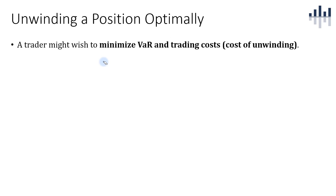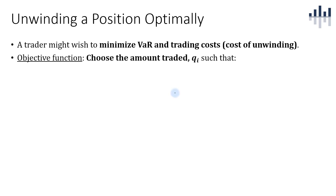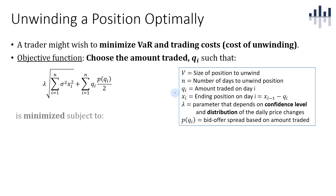This is a trade-off between these two considerations. To frame the problem, a trader might wish to minimize VAR as well as trading costs or the cost of liquidation. We define the objective function as choosing the amount traded, denoted as q sub i, where i is the number of days, such that the VAR plus the trading cost will be minimized. This is subject to the constraint that the sum of q equals V, V being the size of the position that we want to unwind.